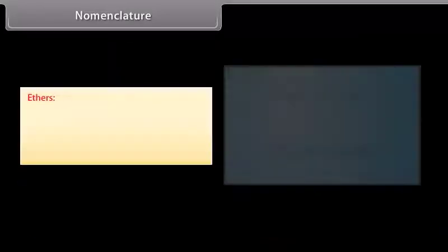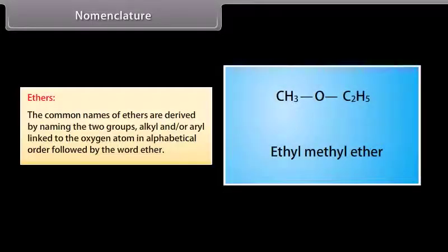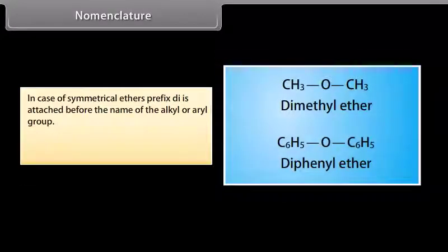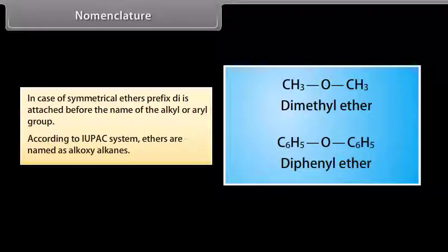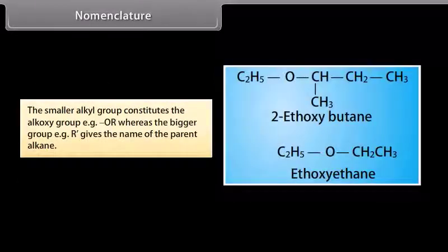Nomenclature of ethers: common names are derived by naming the two alkyl and/or aryl groups linked to the oxygen atom in alphabetical order, followed by the word 'ether.' For symmetrical ethers, the prefix 'di-' is used. According to IUPAC, ethers are named as alkoxy alkanes — the smaller alkyl group constitutes the alkoxy group, while the larger group gives the name of the parent alkane.